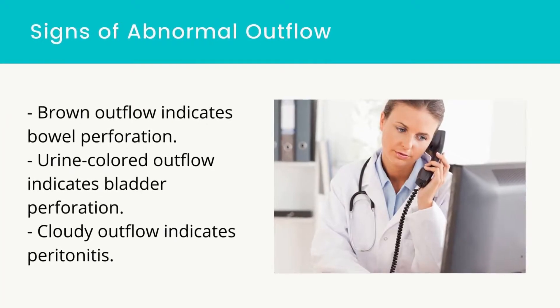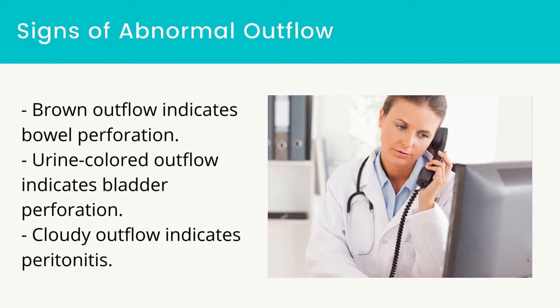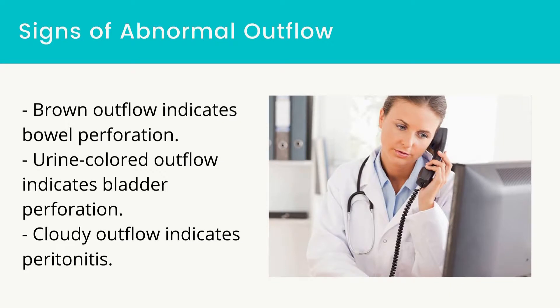Abnormal outflow — bloody outflow after the first few exchanges indicates vascular complications; the outflow should be clear after the initial exchange. Brown outflow indicates bowel perforation, urine-colored outflow indicates bladder perforation, and cloudy outflow indicates peritonitis.